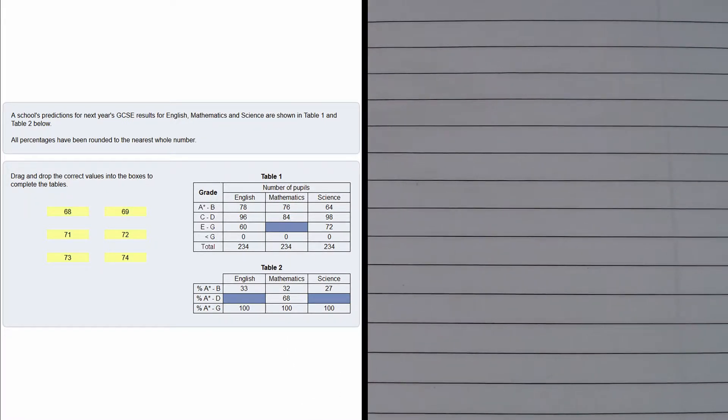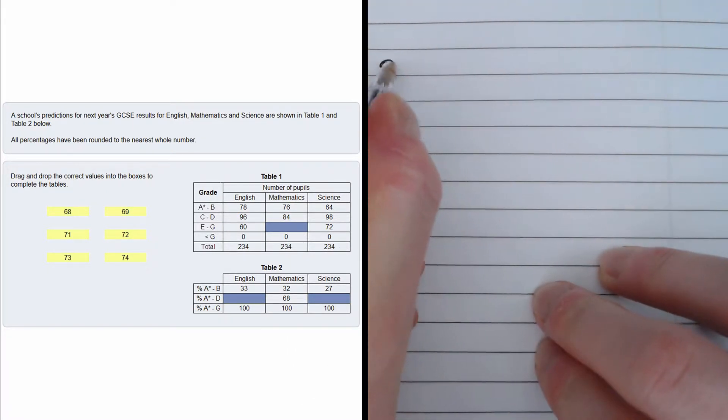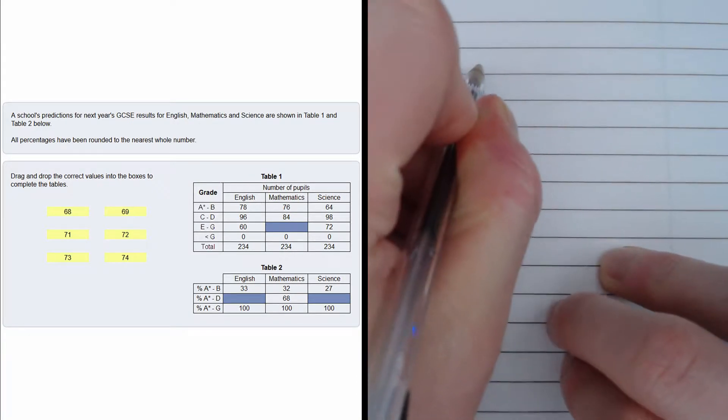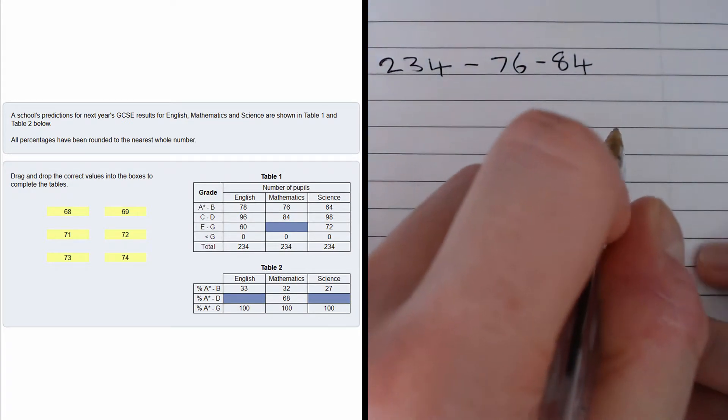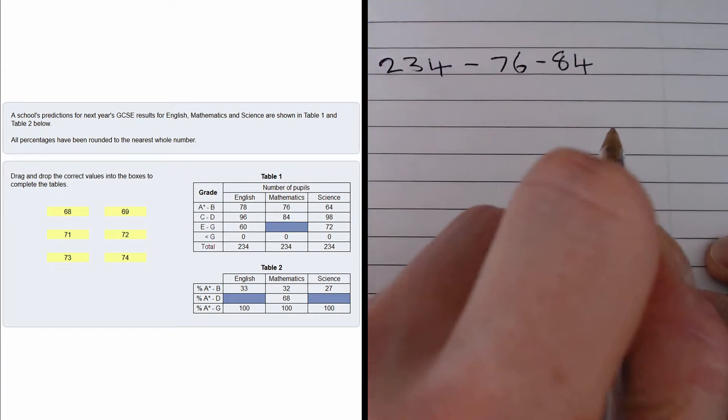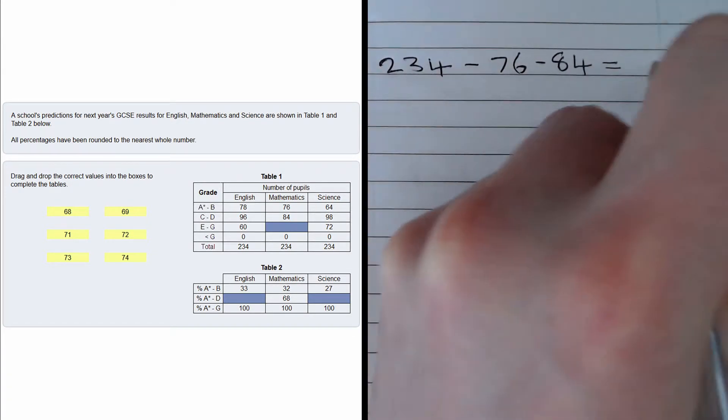The calculation is 234 minus 76 minus 84. We also need to take away zero, but that doesn't affect our answer. This gives us 74.